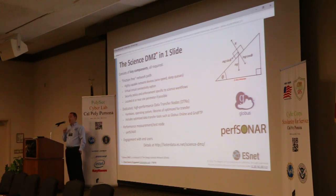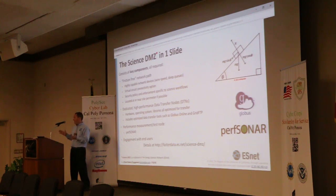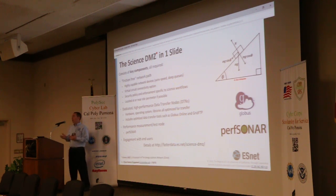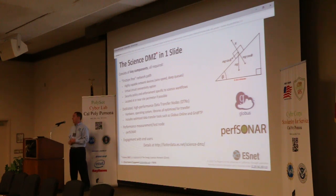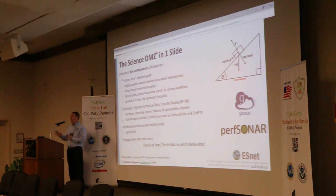ESNet talks about the key components of Science DMZ. First, you need the friction-free network path. You can't have slow firewalls in the way of your multi-gigabit data transfers when you're pulling lots of petabytes from a telescope and you need to get that data onto your campus to do local data analysis using your campus high-performance compute cluster. You can't be going through a slow firewall for that. Having a good wide area network path on the edge of your network in the DMZ zone really enables that scientific research.